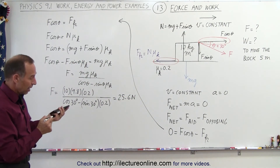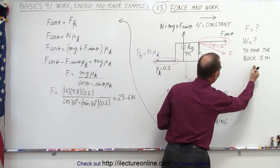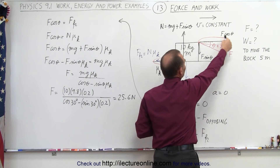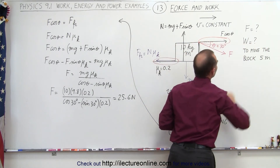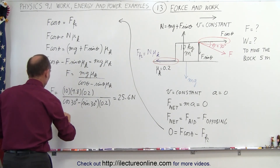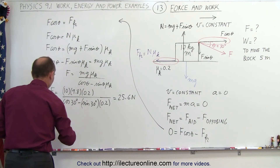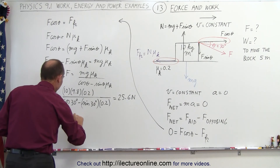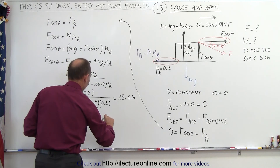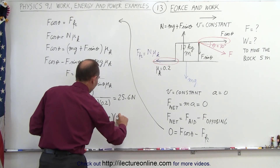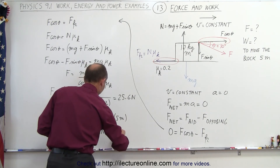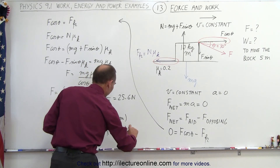Now for the work done — how much work will it take to pull the block a distance of 5 meters? The component of the force pushing the block to the right is the horizontal component that's doing the work. So the work done equals the force times the cosine of theta times the distance: F times cosine of 30 degrees times 5 meters, which is 25.6 newtons times cosine of 30 degrees times 5 meters.